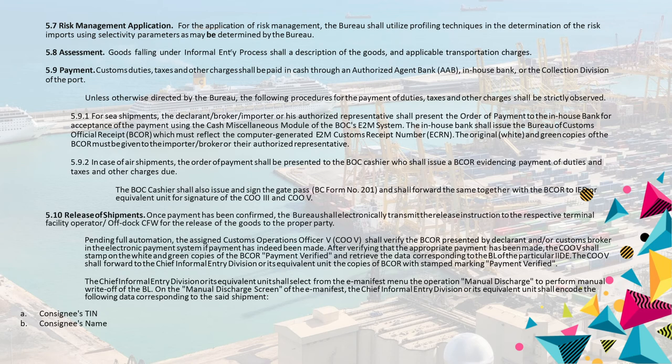The in-house bank shall issue the Bureau of Customs Official Receipt (BCOR), which must reflect the computer-generated E2M Customs Receipt Number (ECRN). The original, white, and green copies of the BCOR must be given to the importer-broker or their authorized representative. 5.9.2 In case of air shipments, the order of payment shall be presented to the BOC cashier who shall issue a BCOR evidencing payment of duties and taxes and other charges due. The BOC cashier shall also issue and sign the gate pass, BC Form No. 201, and shall forward the same together with the BCOR to IED or equivalent unit for signature of the COO3 and COO5.